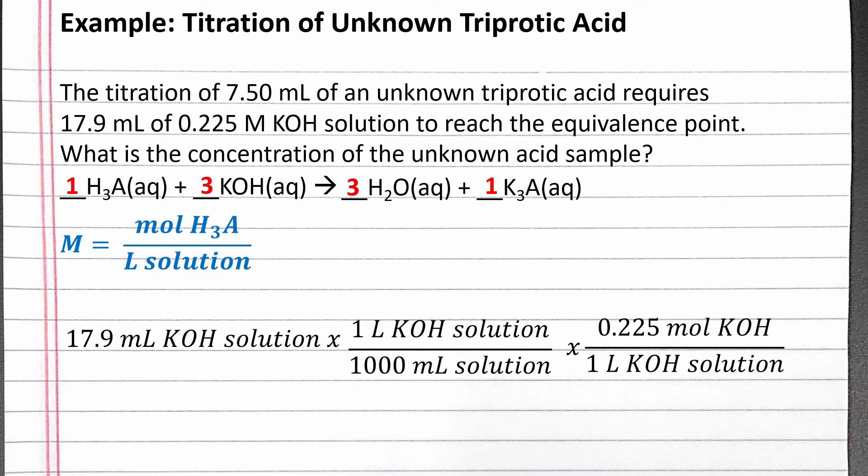Then we can convert from moles of potassium hydroxide to moles of H3A using the coefficients in the balanced chemical equation.